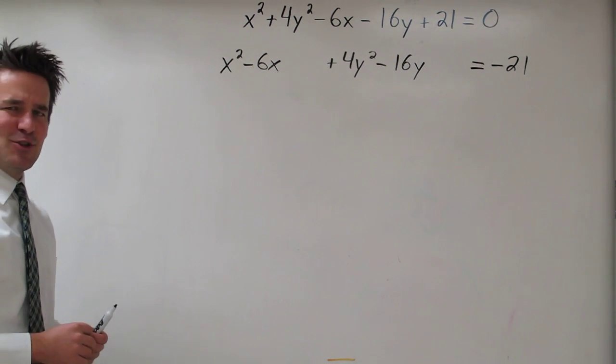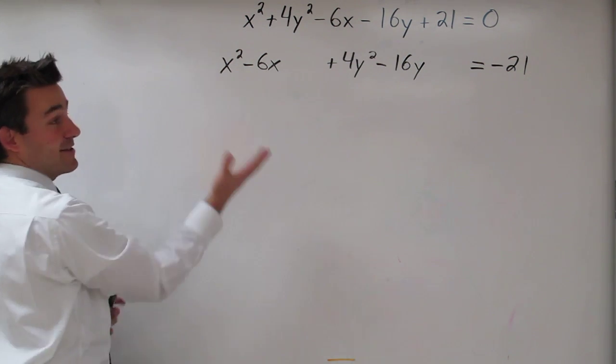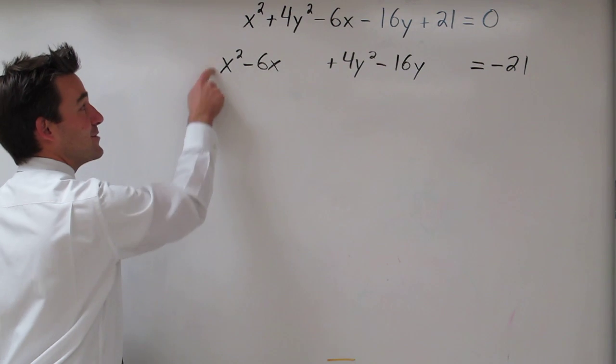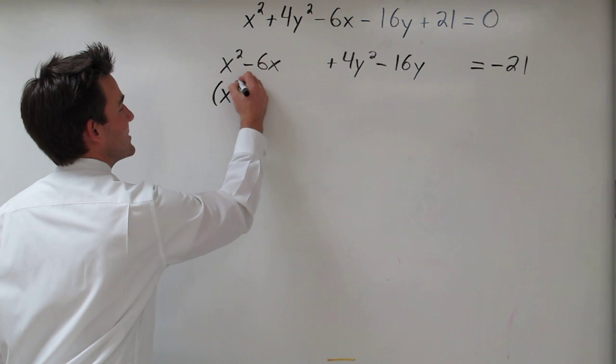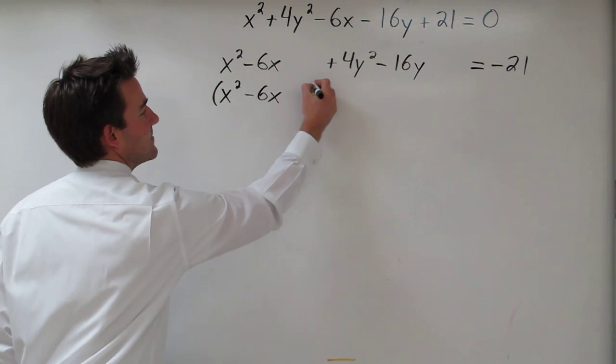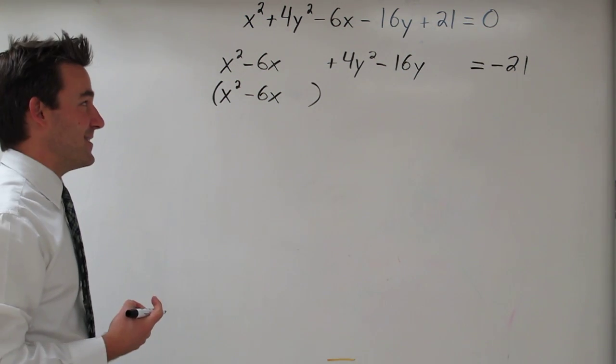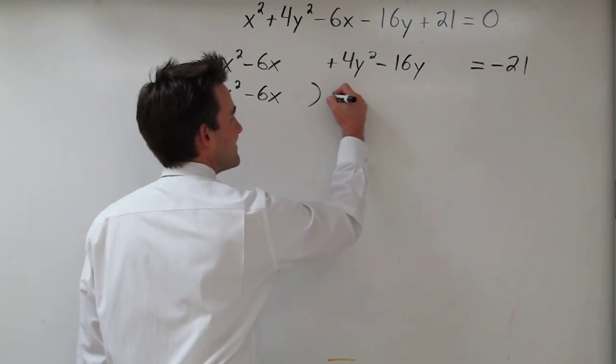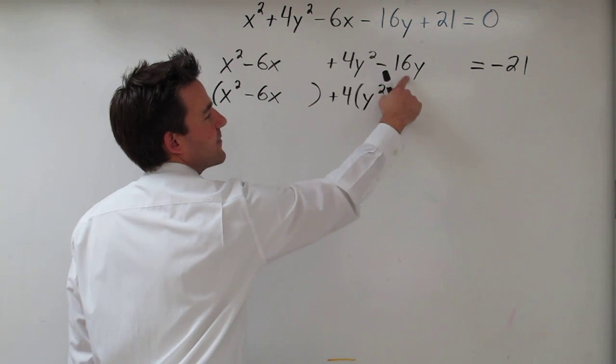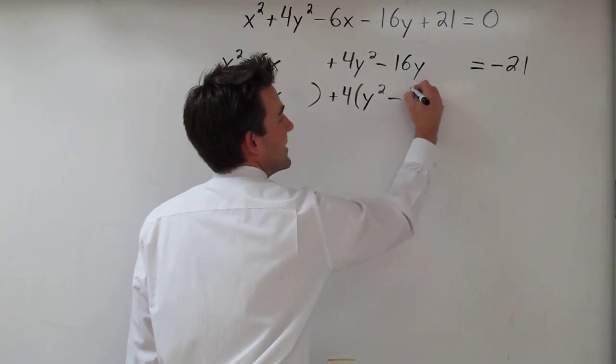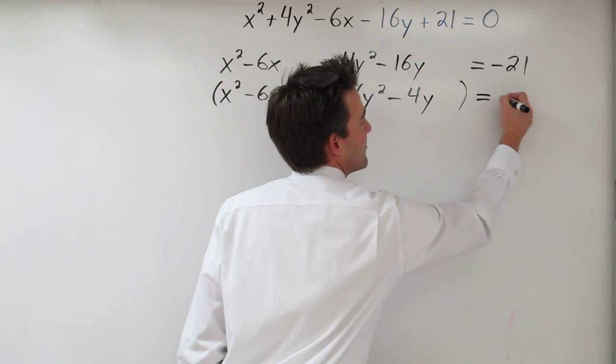The next thing we need to do is factor out any coefficients on the squared terms. On x squared, there's a 1 coefficient. So when we factor that out, it won't really make a difference. So we're just going to rewrite it with parentheses and leave a little space for our completing the square. Now the y squared term has a 4 in front of it. So we need to factor out that 4. When we factor out 4, we get y squared. Factor out the 4 from the negative 16, and we get negative 4y. Leave a little bit of space for completing the square. And this all still equals negative 21.